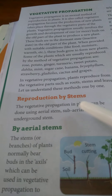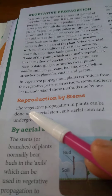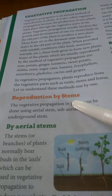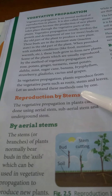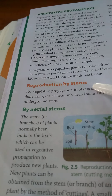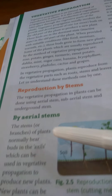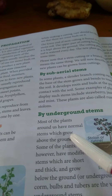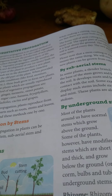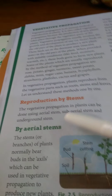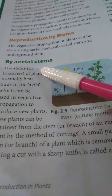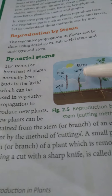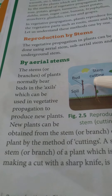In vegetative propagation, the new plant can be formed from stem, root, or leaves. Let us first discuss how stems can form a new plant — reproduction by stems. Stems may be aerial, sub-aerial, or underground, and we will discuss one by one how new plants arise from them.